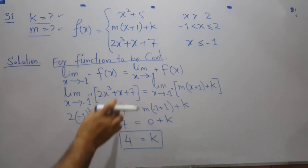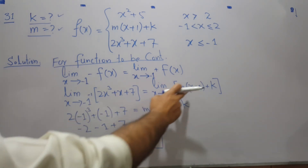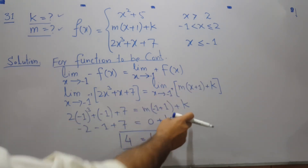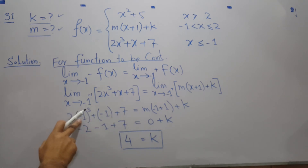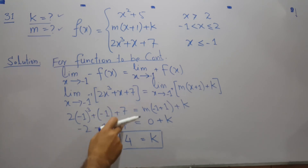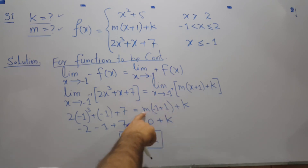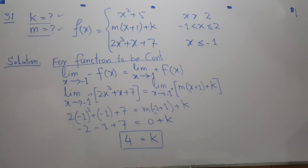Substituting the limiting values: on the left hand side, minus 1 gives us minus 2 minus 1 which is minus 2, plus 7, and on the right hand side, minus 1 plus 1 gives 0, so 0 times anything is 0. This gives us the k value equal to 4.